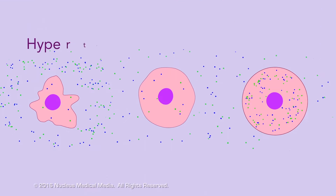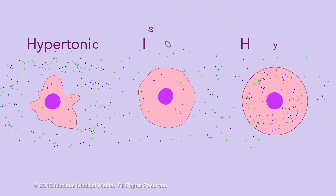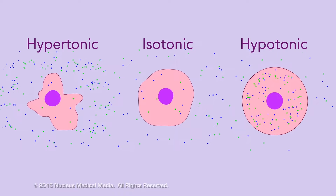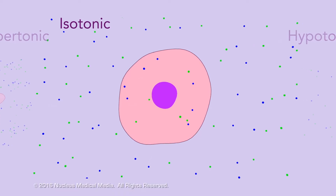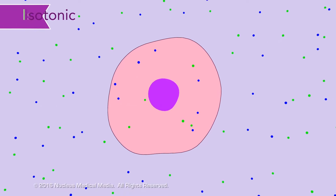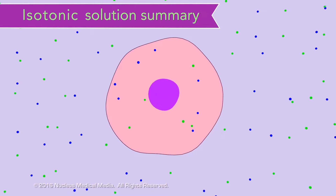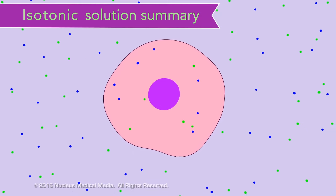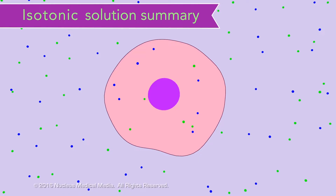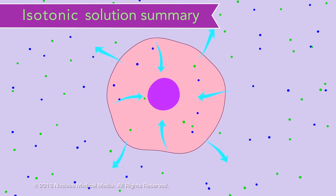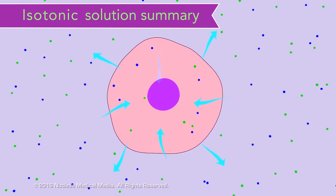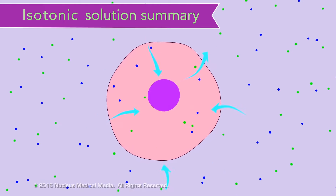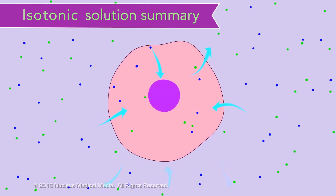To recap, we can have solutions that are hypertonic, isotonic, or hypotonic with respect to the cell. In an isotonic solution, the water concentration inside and outside the cell stays about the same, because the concentration of solute is the same. As a result, there's equal movement of water in and out of the cell, so the size of the cell stays the same.